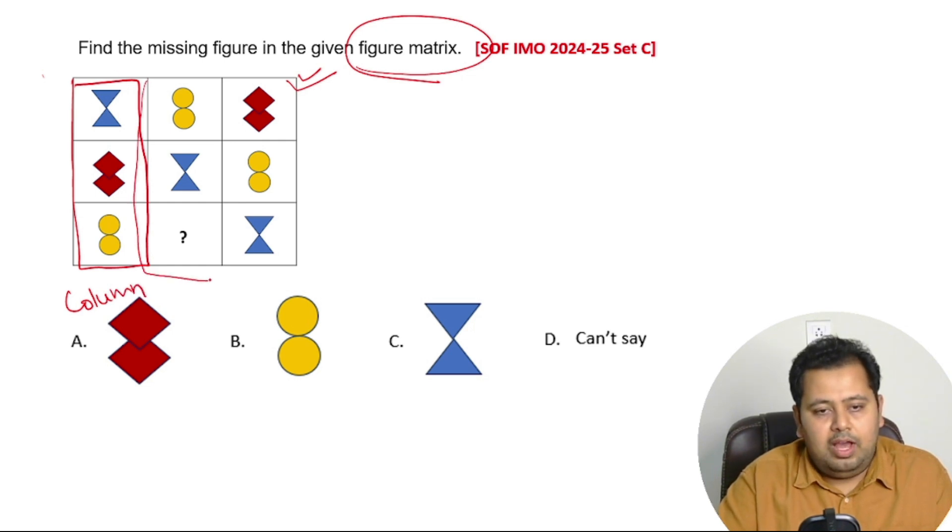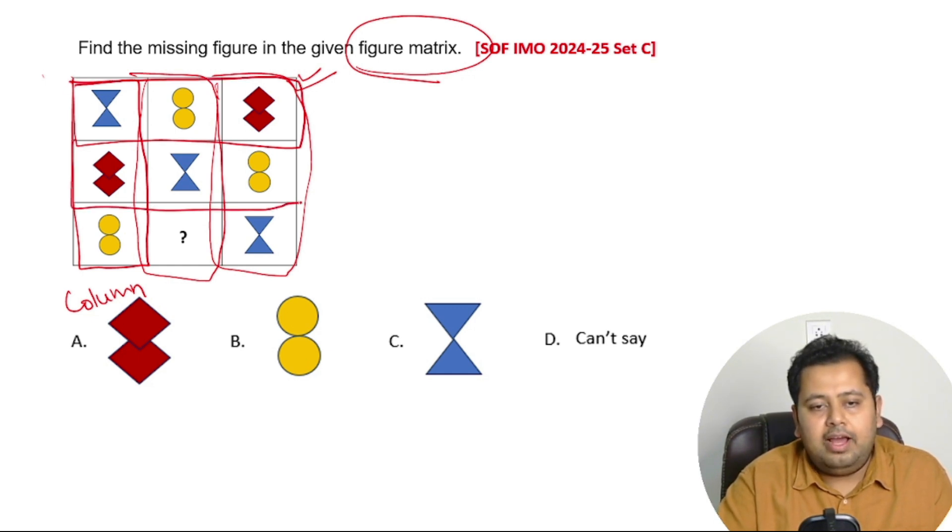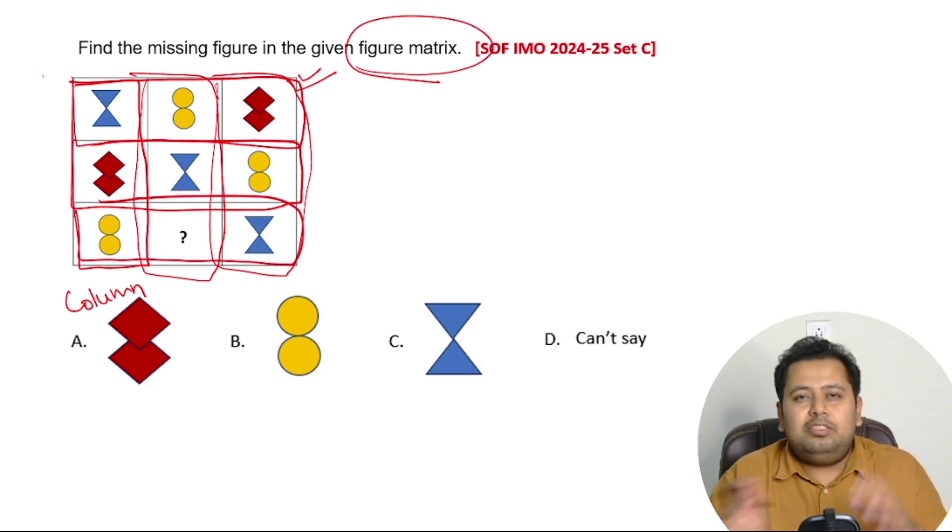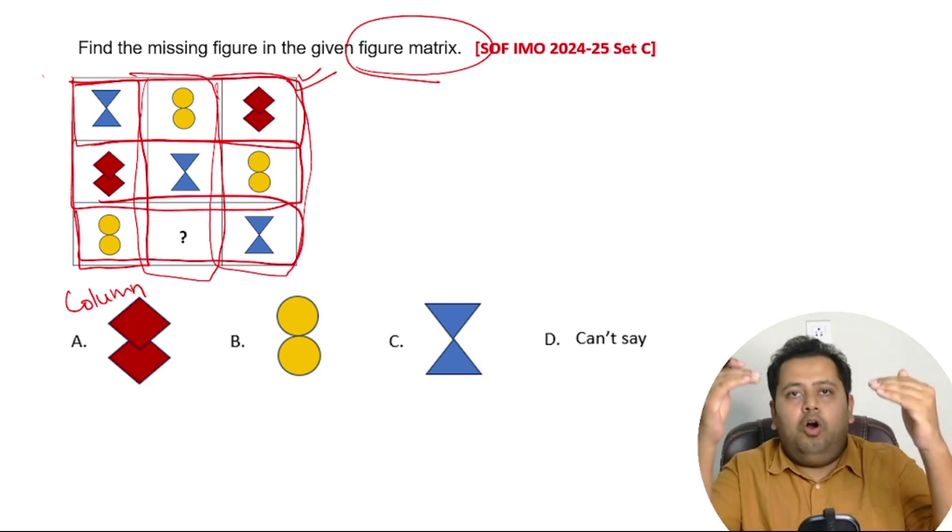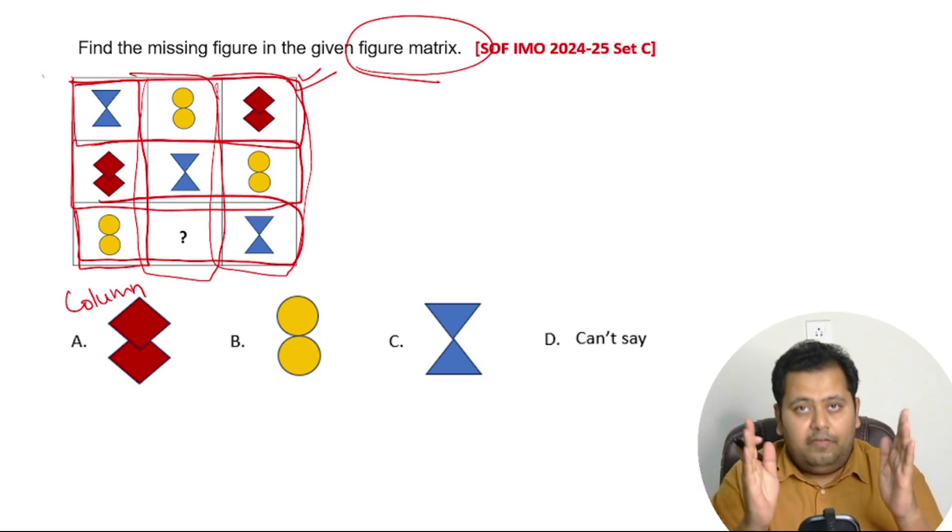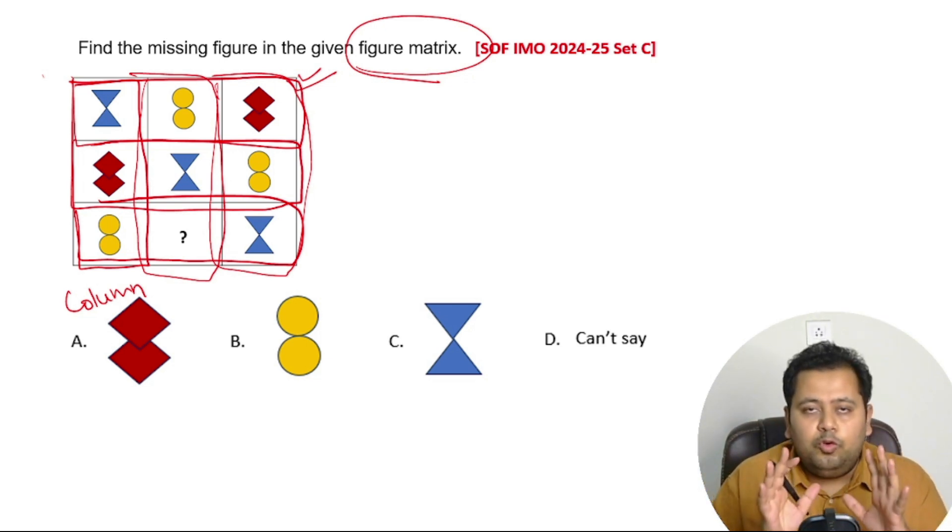This is nothing but this is called a row. So you have row one, you have another row, this one, and you have this row. Now if you go either column wise or row wise, howsoever you want to go.